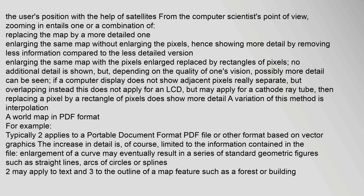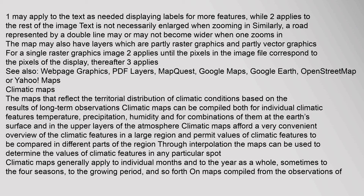For vector graphics formats such as PDF files, enlargement of a curve may eventually result in a series of standard geometric figures such as straight lines, arcs of circles, or splines. When zooming in, a road represented by a double line may or may not become wider. A map may also have layers which are partly raster graphics and partly vector graphics. For a single raster graphics image, enlargement applies until the pixels in the image file correspond to the pixels of the display. See also: MapQuest, Google Maps, Google Earth, OpenStreetMap, and Yahoo Maps.